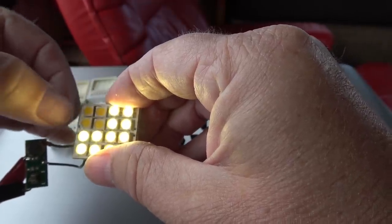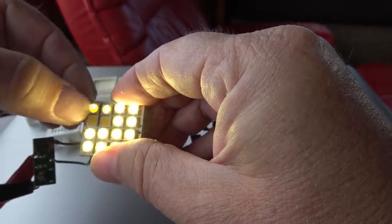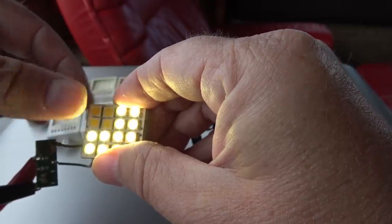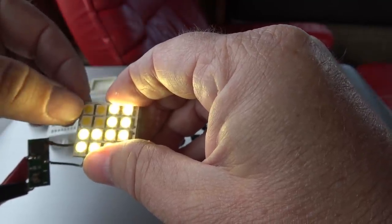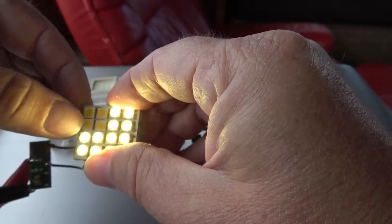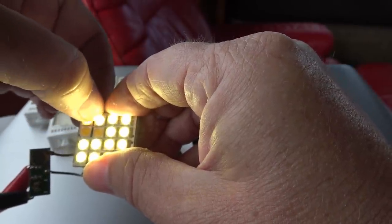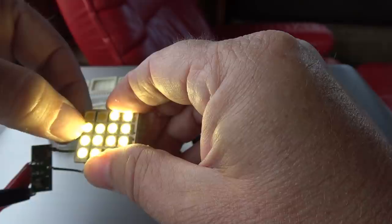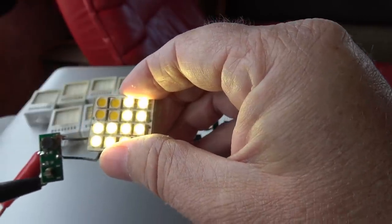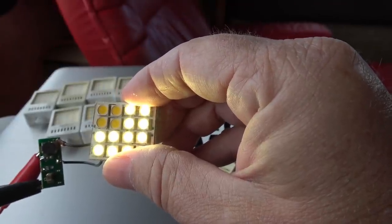I imagine what's happened is the soldering on the board, over time the heat of the small LEDs, because even though they're not hot to the touch, over time they will cause heat problems. I guess if I got a small enough soldering iron I could get in there and maybe repair it. Anyway, that's what's going on with that one. Let's go look at the other one that's failed, it's completely dead.